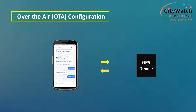To configure a device over the air, we simply send structured SMS instructions or commands to the SIM number assigned to the tracking device during installation — just the same way I sent a stop command to immobilize the vehicle while testing the immobilizer function in the previous lesson.